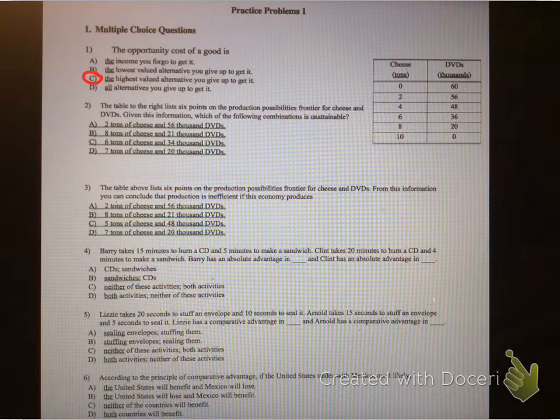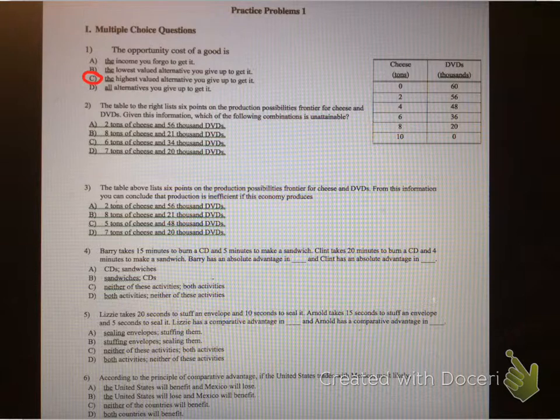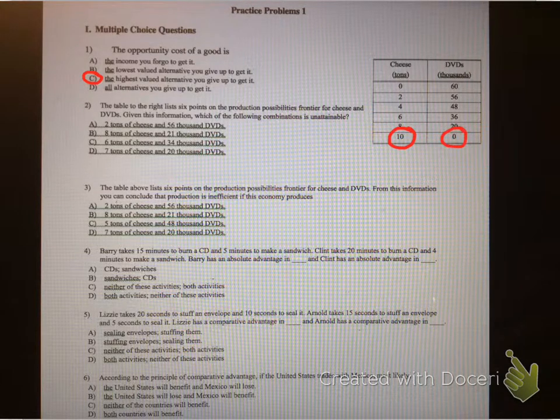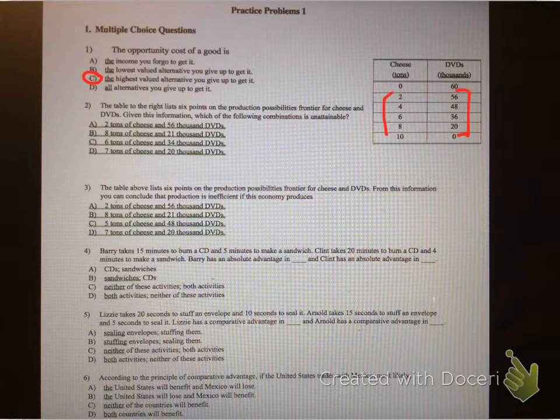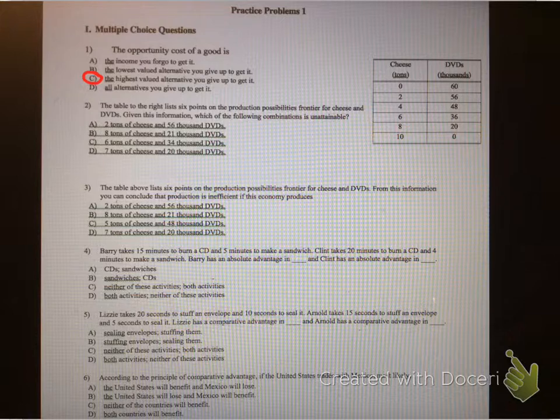Based off that explanation, you should then be able to figure that one out. Okay, so the table to the right lists six points of production possibilities frontiers for cheese and DVDs. Given the information, which of the following combinations is attainable? Okay, so pretty much what this is saying is if you produce zero amount of cheese, the maximum amount of DVDs you could produce is 60. And if you put all your efforts and resources into making cheese, the maximum amount you could produce is 10, that means you would make no DVDs. And then these values show how your resources are divided.